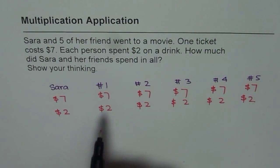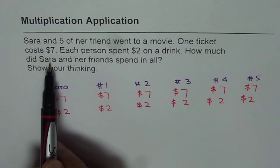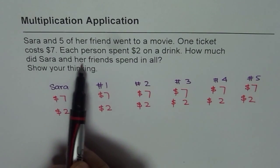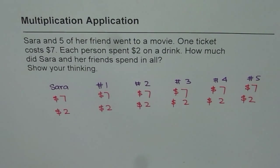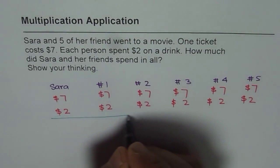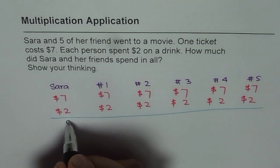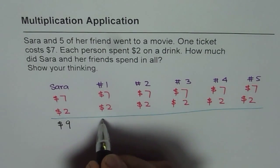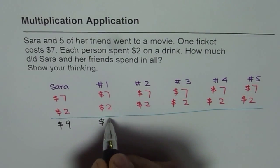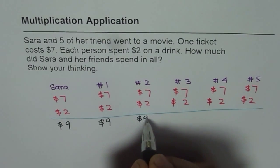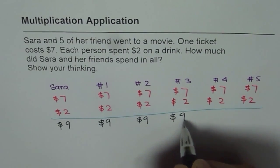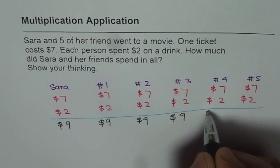Now the question is: how much did Sarah and her friends spend in all? So we need to just add them up. 7 plus 2 is $9.00 — so $9.00 each. That is what each person spent.